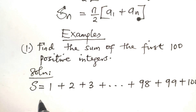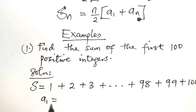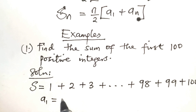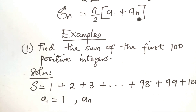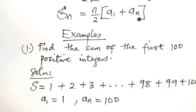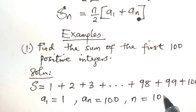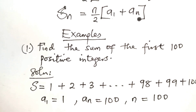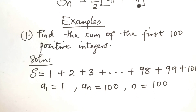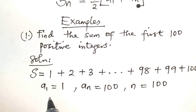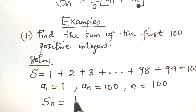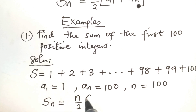Here, A1, the first term, is equal to 1. Then An, the last term, is equal to 100. N is equal to 100 also. Then the sum Sn is given by n over 2 into A1 plus An.